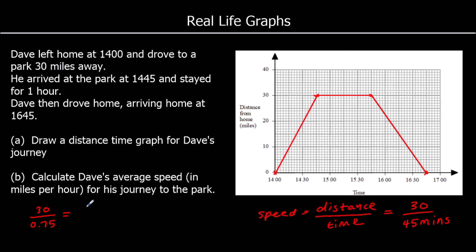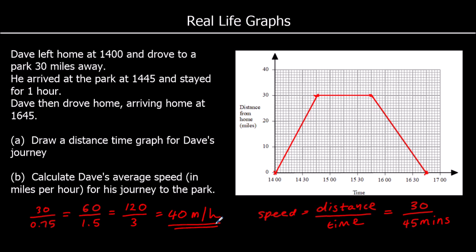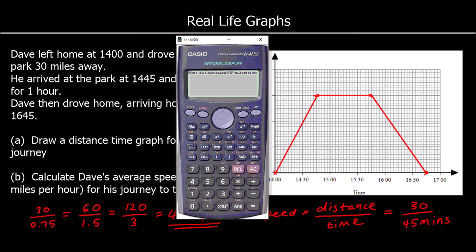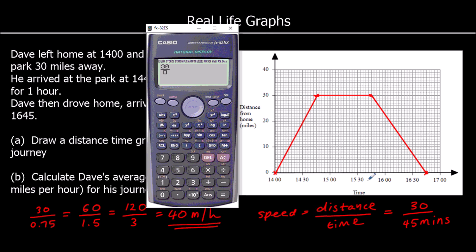If I double top and bottom I'll have 60 over 1.5, and double it again gives 120 over 3, and 120 over 3 is 40. So it's 40 miles per hour. We could have also used the time button on the calculator: 30 miles in 45 minutes, which is 0 hours 45 minutes, and that gives 40 — so 40 miles an hour.